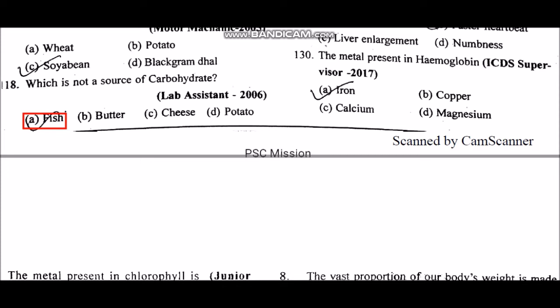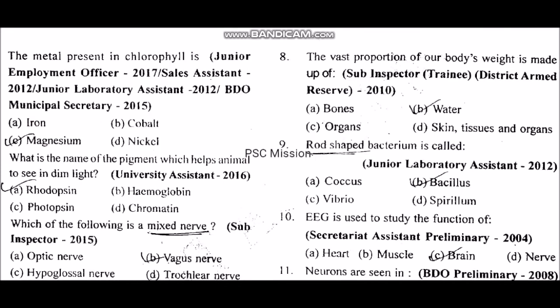The metal present in hemoglobin is iron. The metal present in chlorophyll is magnesium.